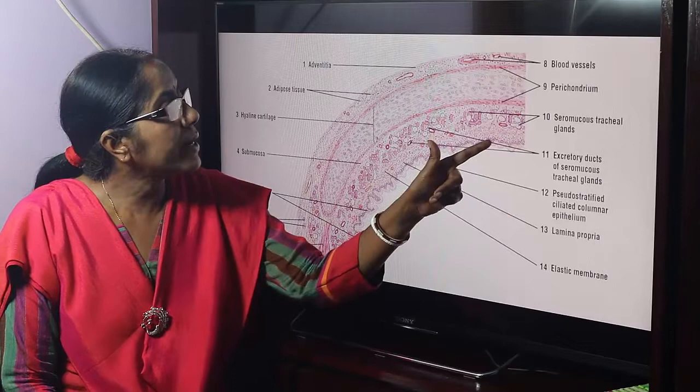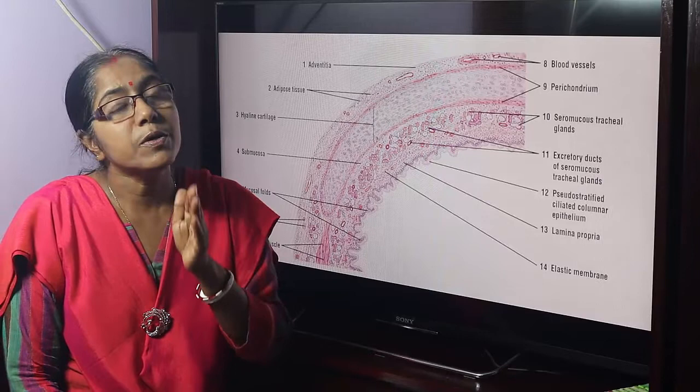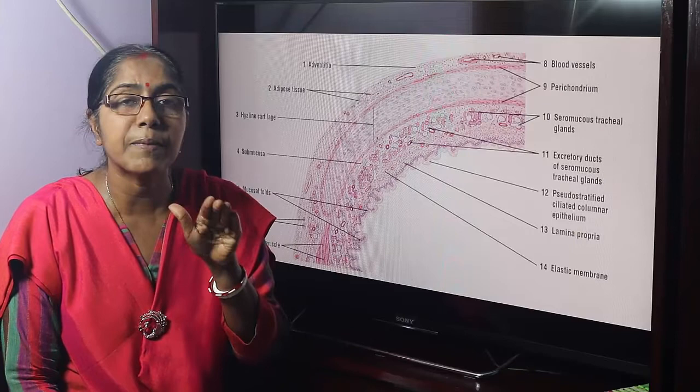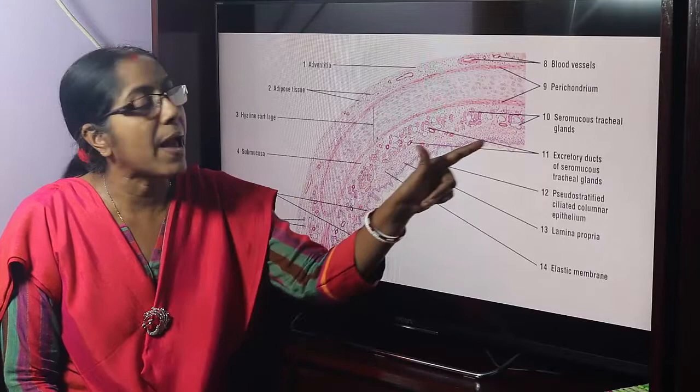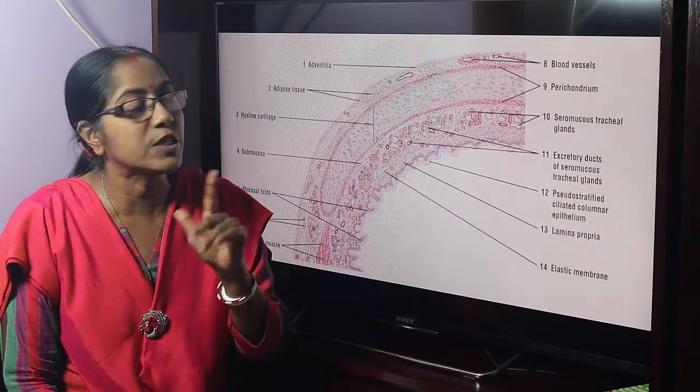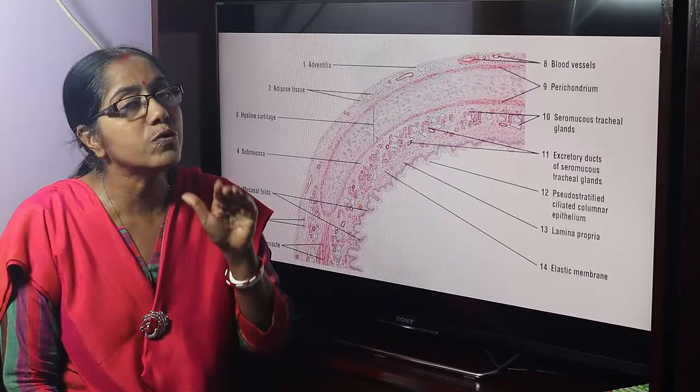Now, this is the mucosa. Mucosa is composed of three layers: lining epithelium, lamina propria, and muscularis mucosa — this applies to the digestive system. But in the case of the respiratory system, the mucosa consists of lining epithelium and lamina propria. This is the lamina propria — it is loose connective tissue. Perichondrium is dense connective tissue; lamina propria is loose connective tissue.